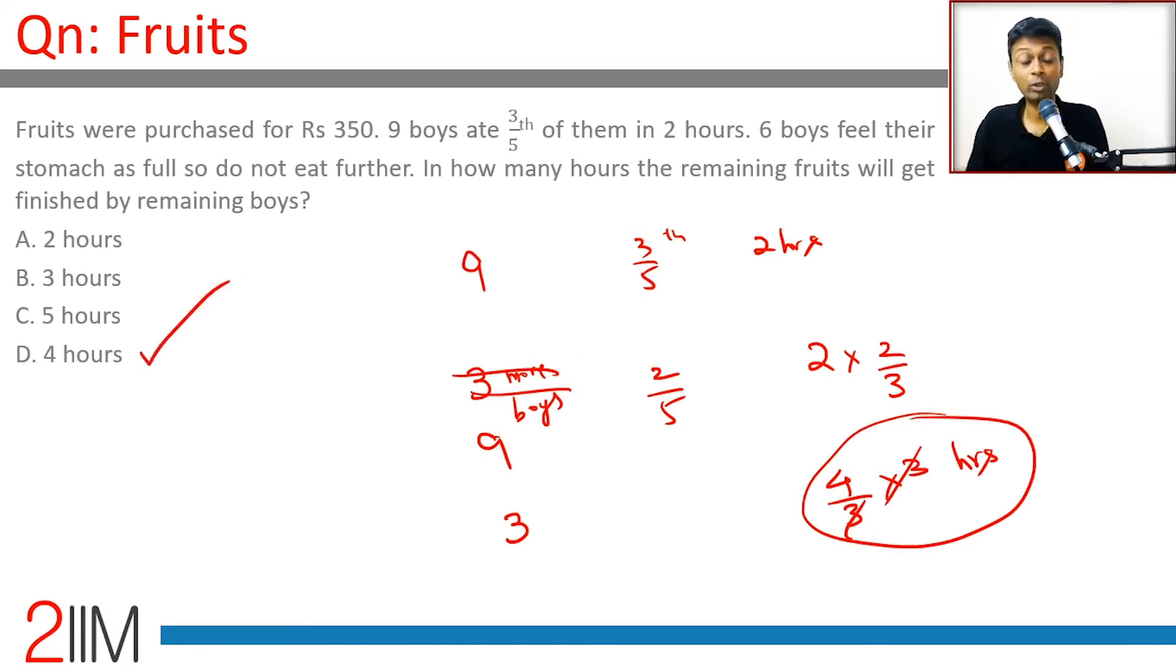We know that 9 boys finish 3/5 in 2 hours. Let's assume all 9 boys are still there. To do the remaining 2/5, they will take 2 times 2/3. Why 2/3? Because 3/5 is done and 2/5 is remaining.